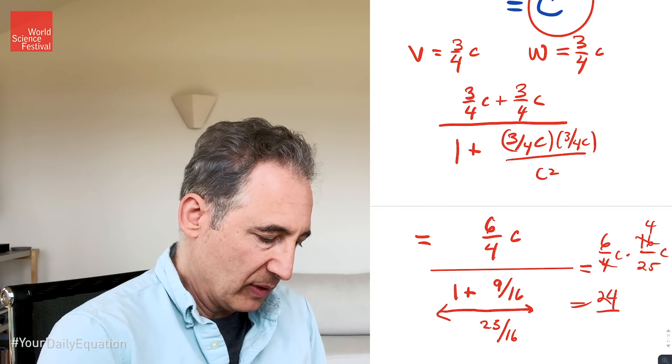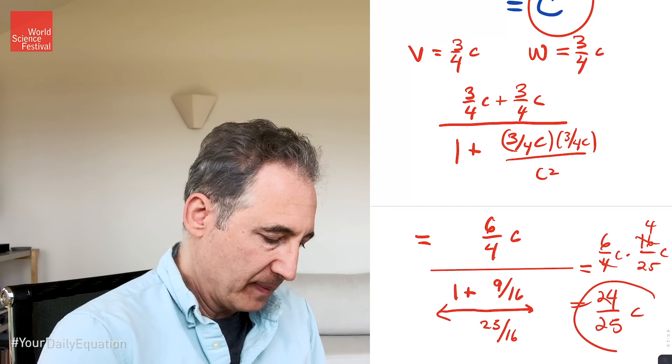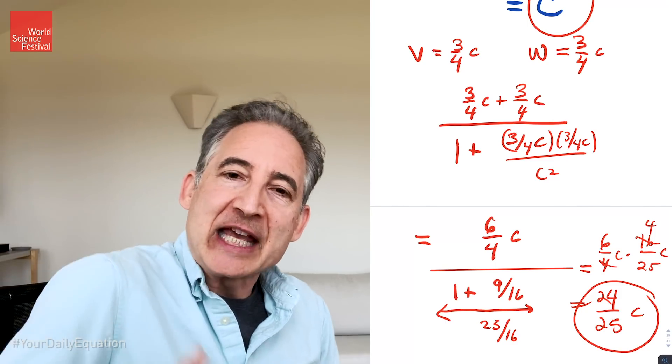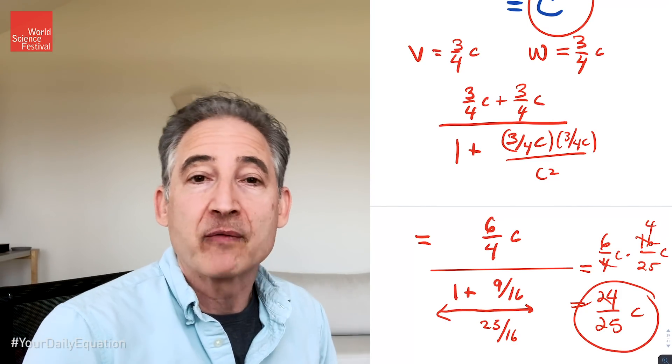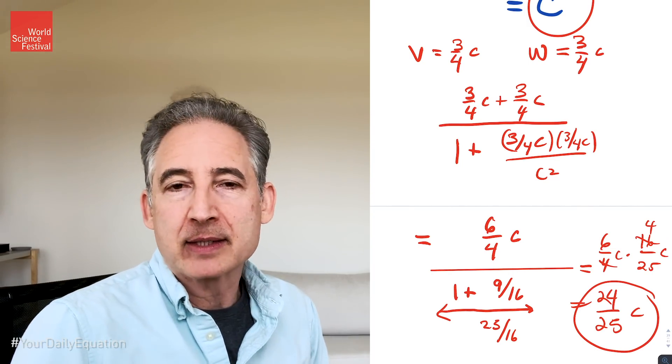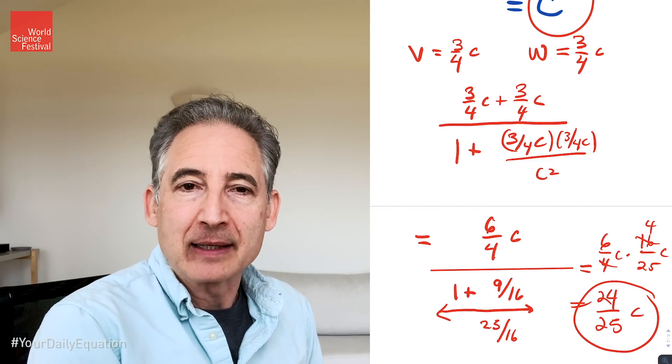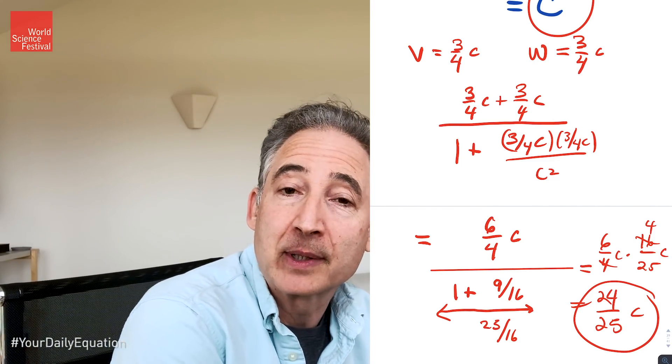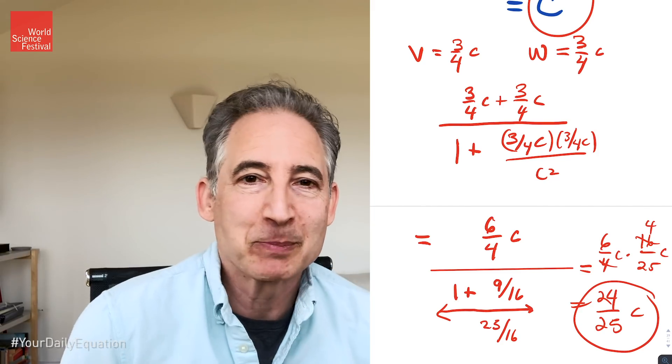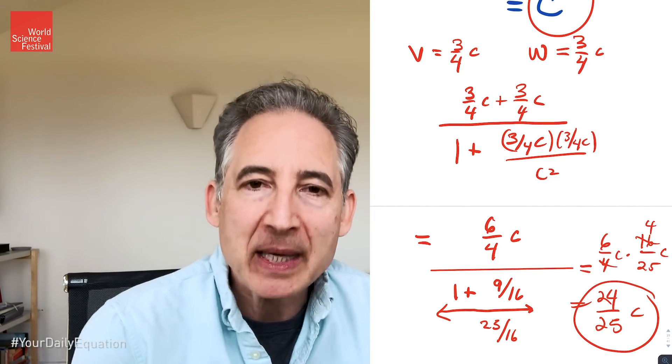And now the 4 goes in here and we get, I left out the c, we get 24/25 times c, less than the speed of light. So the offensive term, 6/4 times the speed of light, is reduced by the correction factor to 24/25 times the speed of light, less than c. And that will always be the case. Whatever numbers you put into this relativistic velocity combination formula, it will always yield a net speed from your perspective, from Gracie's perspective, that is less than the speed of light, regardless of the speeds put into that formula, as long as each such speed is less than or equal to the speed of light.